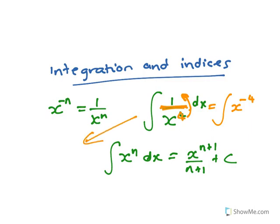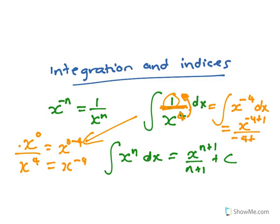Another way to think about it: that 1 on top is like x to the 0, and the bottom is x to the 4. What do you do to indices when you divide? You subtract them. So it's x to the minus 4. Then add 1 to the indices: minus 4 plus 1. So you get x to the minus 3 over minus 3 plus c. It's good habit to rewrite that as minus 1 over 3x to the 3 plus c.